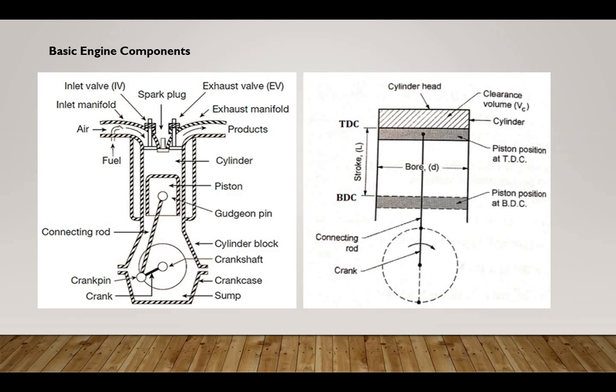In nomenclature, the cylinder bore is the internal diameter of the cylindrical hole in the engine block, where the piston moves up and down and compresses the air-fuel mixture to generate power. It determines the displacement of the engine and affects its performance and efficiency. Piston area refers to the cross-sectional area of the piston in the engine, and it plays a crucial role in determining the force generated by the engine during the power stroke.